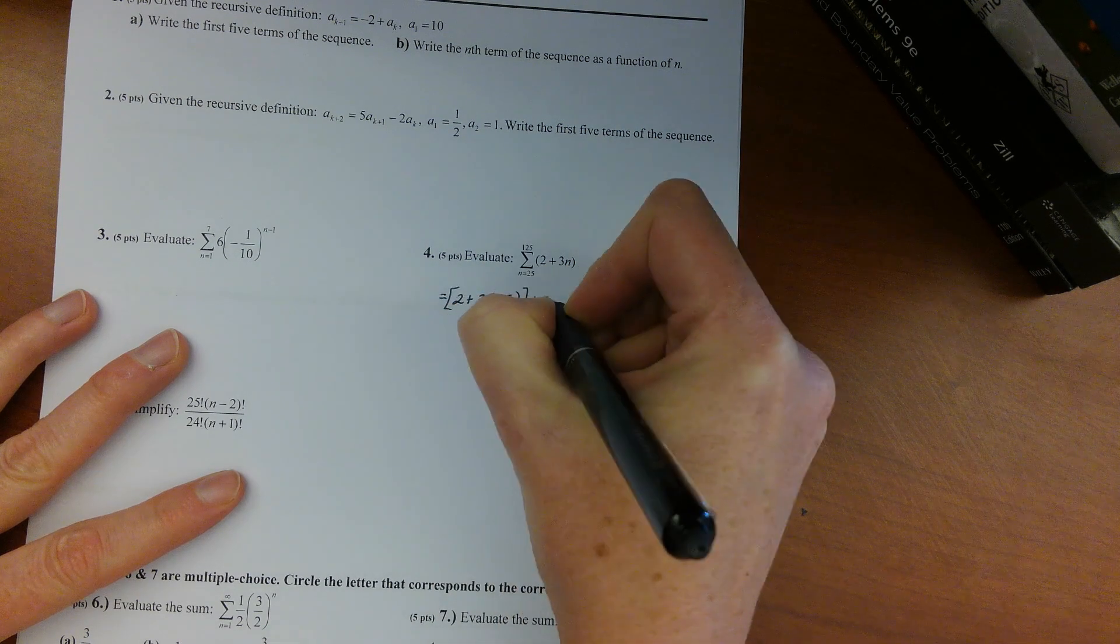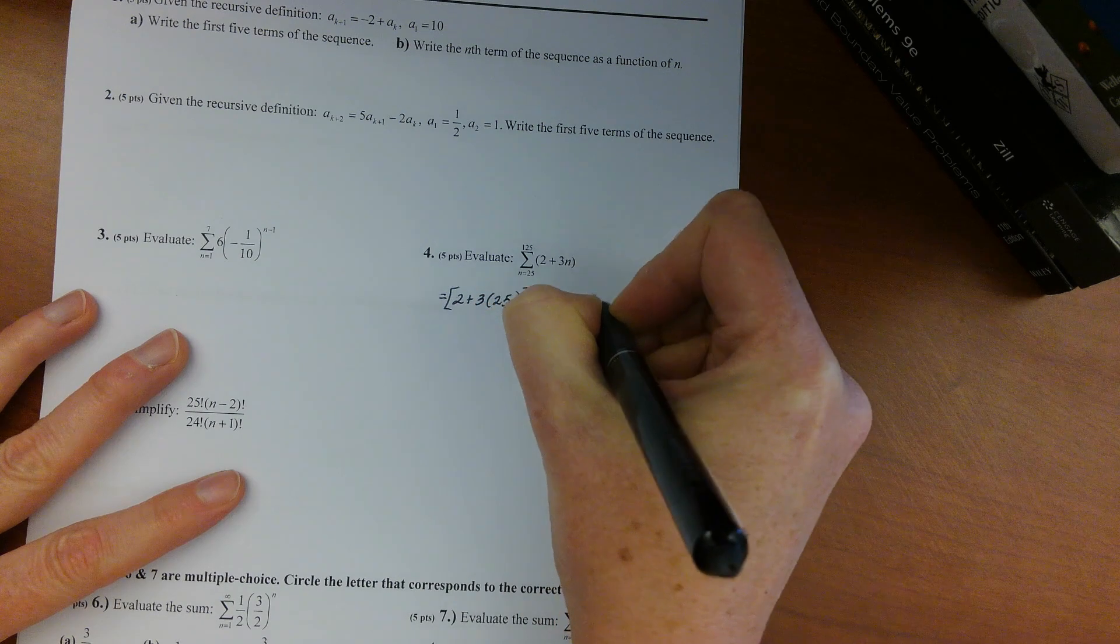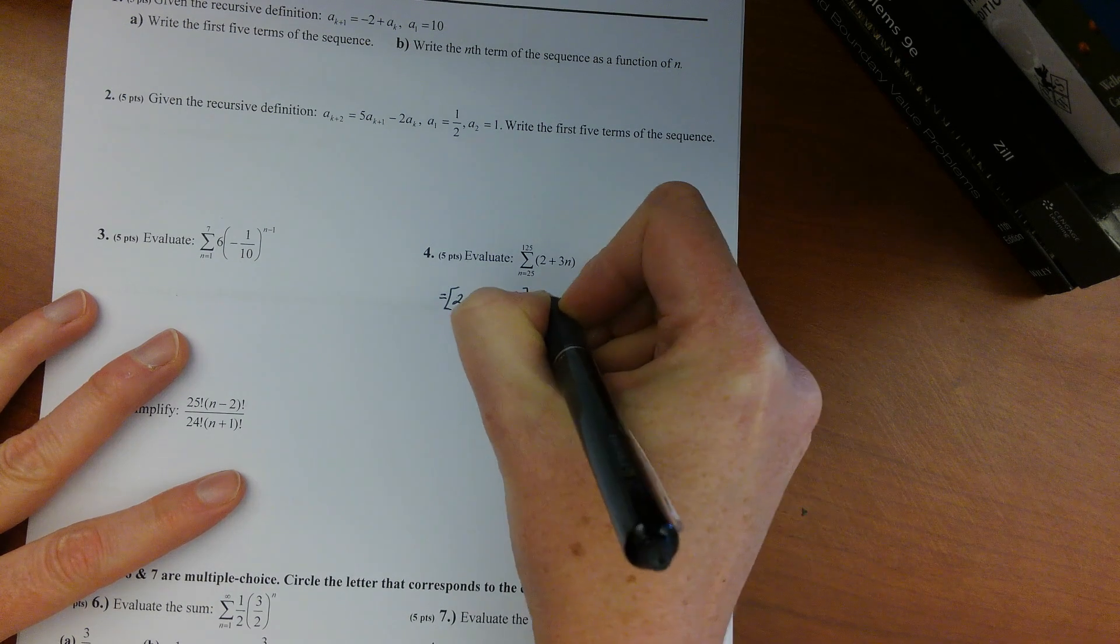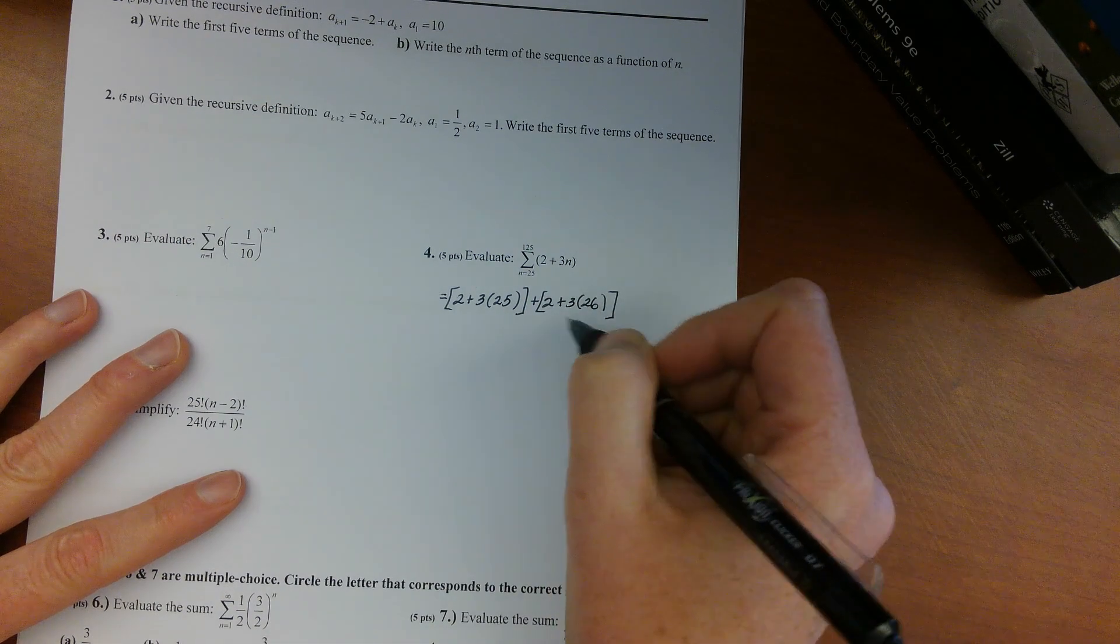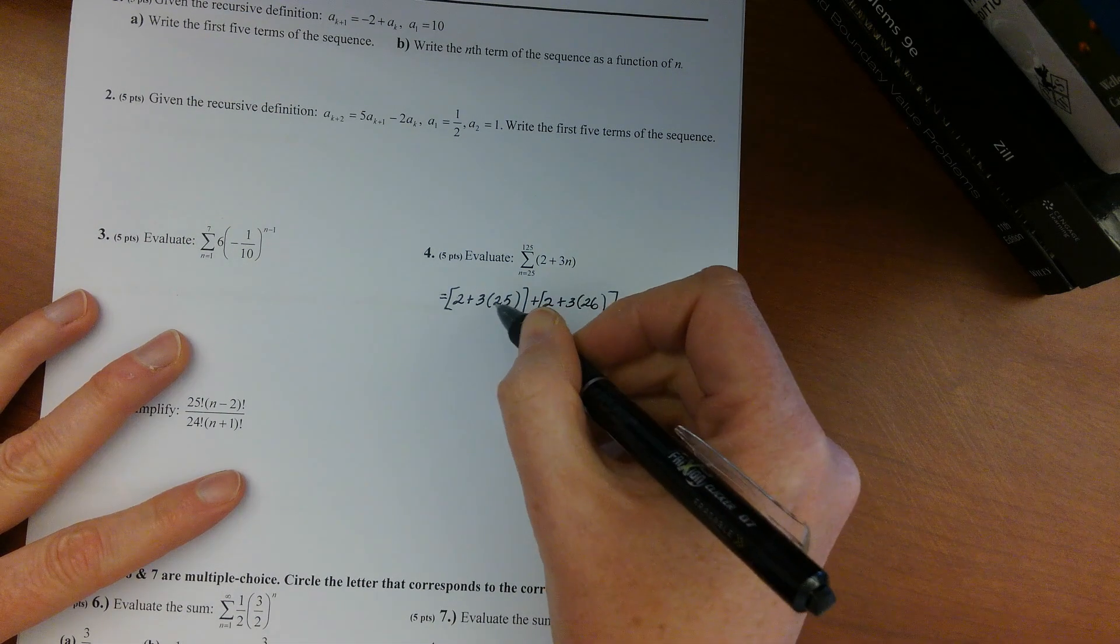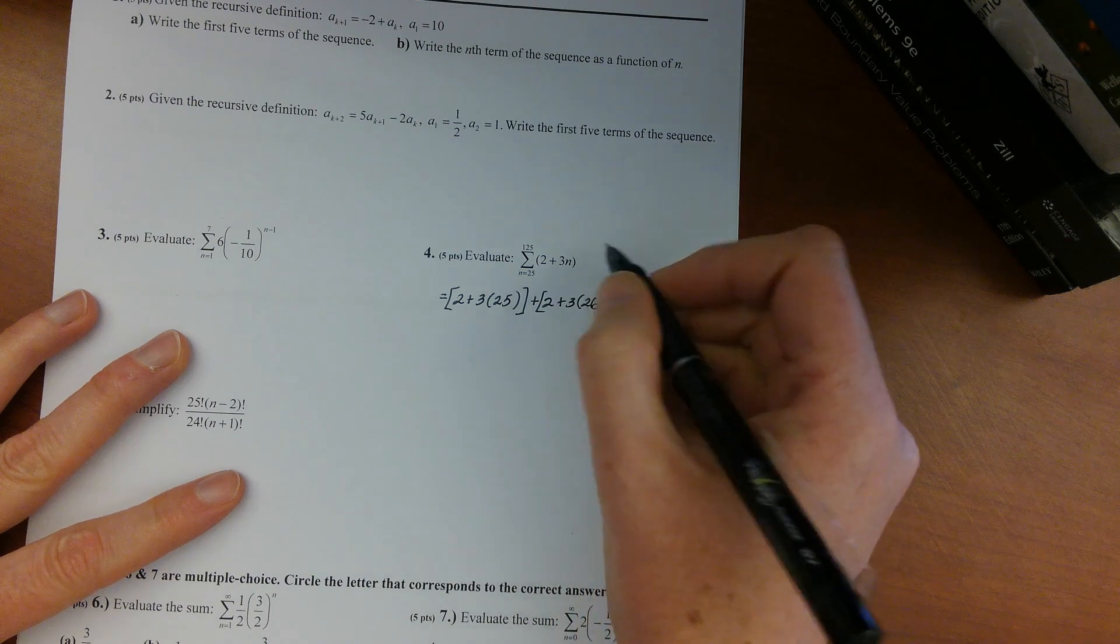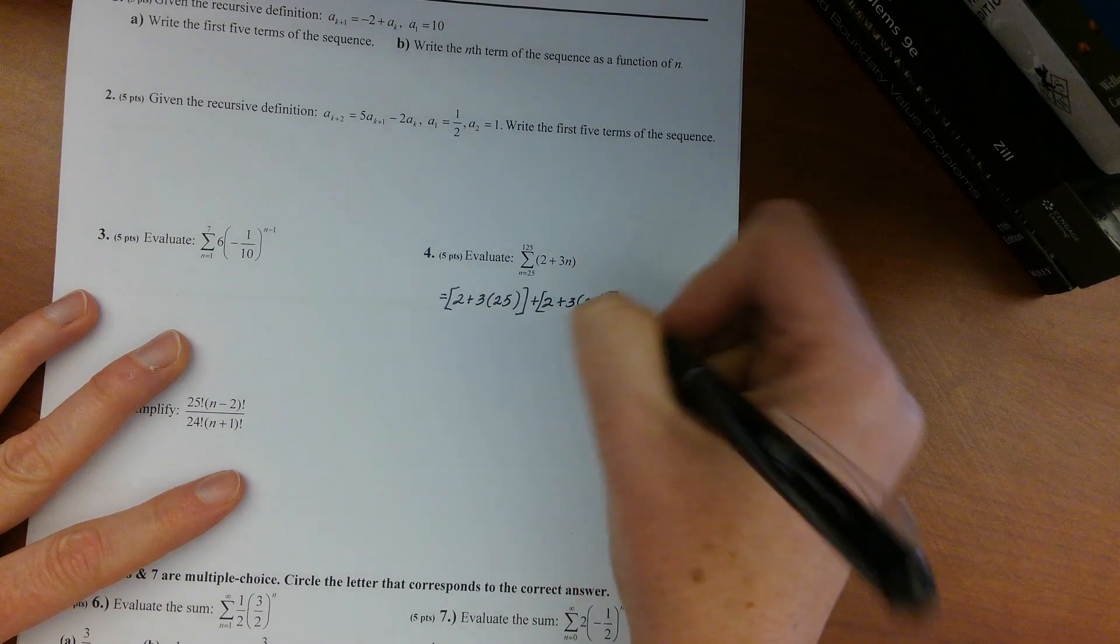Putting 26 in would give you 2 plus 3 times 26, and so pretty quickly I think you could pick up on the fact that we basically just keep adding one more 3 each time.